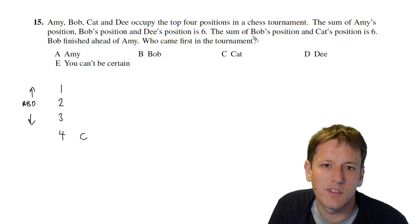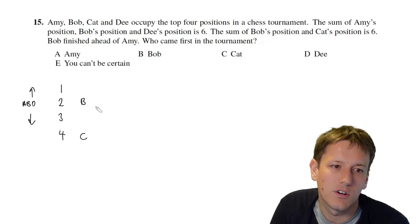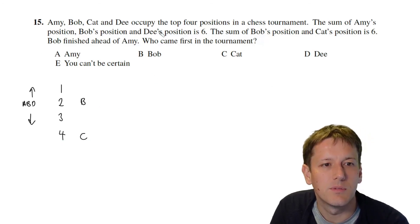We now know that the sum of Bob's position and Cat's position is 6. So Cat is 4 that means Bob must be 2 so Bob is second here and we also know that Bob finished ahead of Amy.